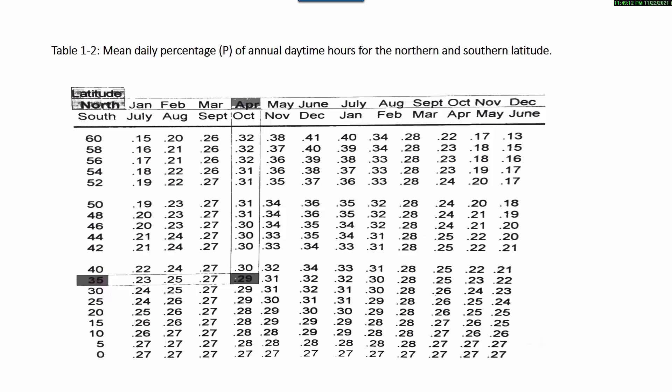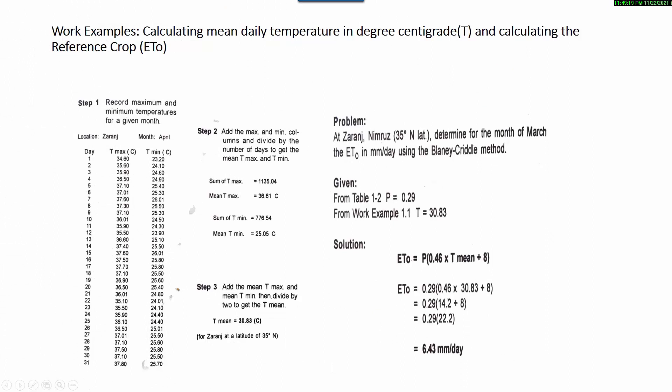From the work example, T, the mean temperature for the month of April at this location, equals 30.83. So we solve the Blaney-Criddle formula and we get the reference crop as 6.43 millimeters per day.